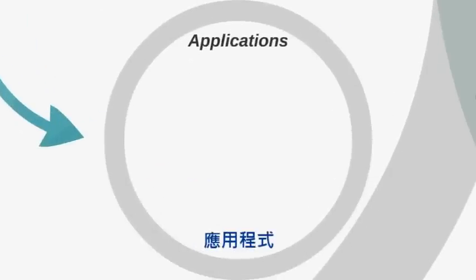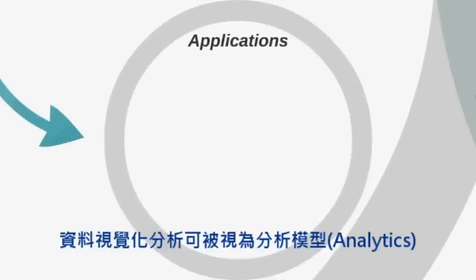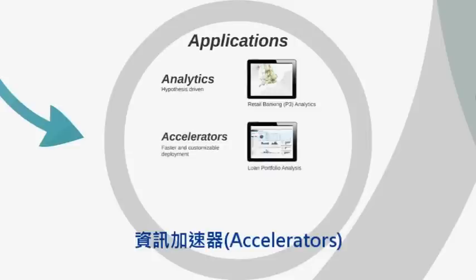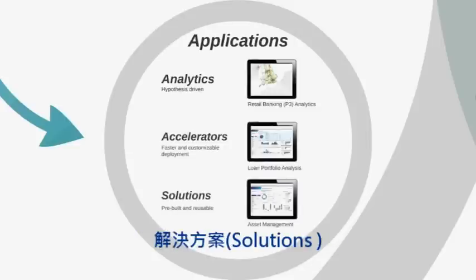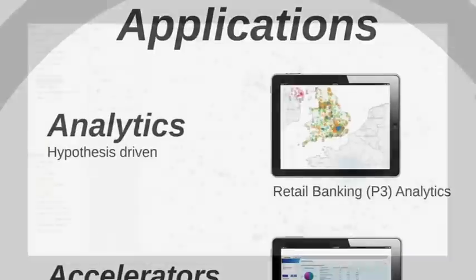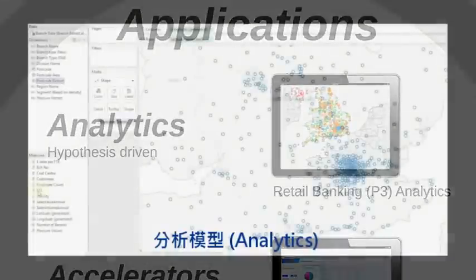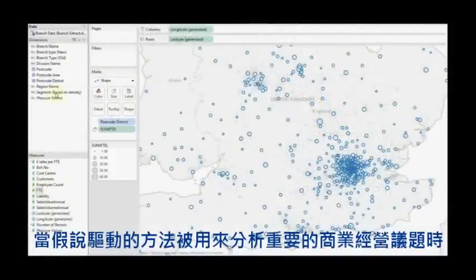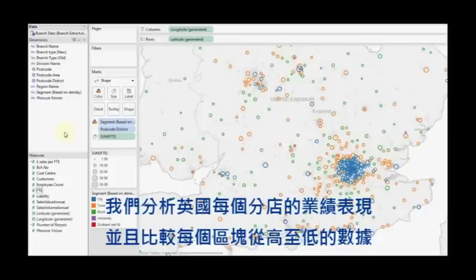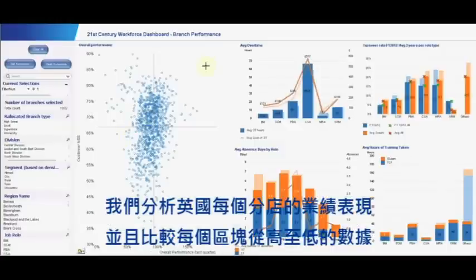Applications. Visual Analytics can be used for analytics, as accelerators, or as solutions. Analytics is when a hypothesis-driven approach is used to address significant business issues. Here we analyze branch performance across the UK and compare the performance of branches in the top and bottom quartiles.